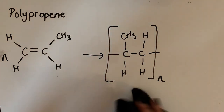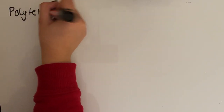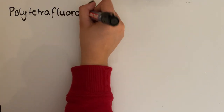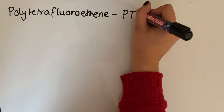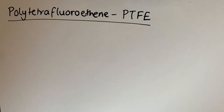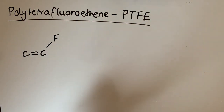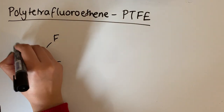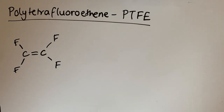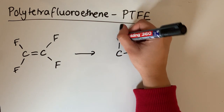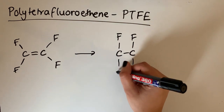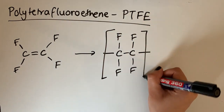The last polymer we're going to look at is polytetrafluoroethene, shortened to PTFE, also known as Teflon. The monomer is tetrafluoroethene — 'tetra' means four, so it has four fluorine atoms on the ethene molecule. A repeat unit of polytetrafluoroethene shows the carbon backbone with all four hydrogens replaced by fluorine atoms.